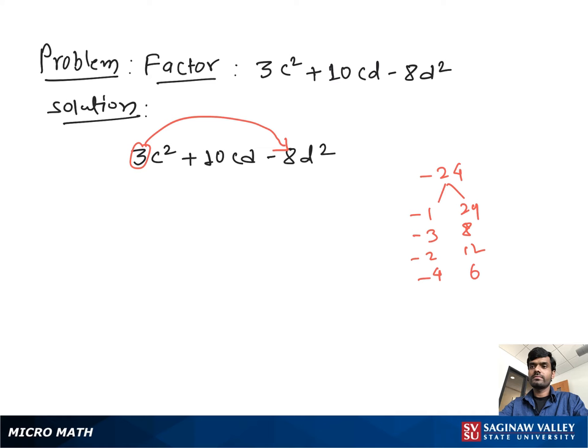a pair of numbers which multiply to give us negative 24 and add to give us positive 10. That number is negative 2 and 12. So we can write 3C² - 2CD + 12CD